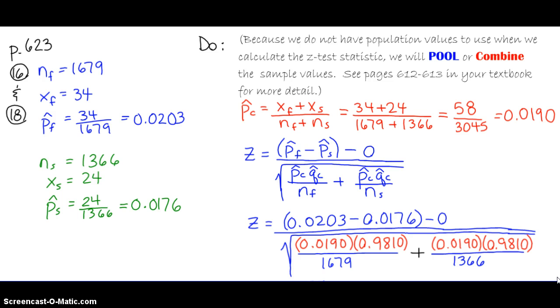And number 18, where we actually carry out the hypothesis test. I've rewritten here in blue and green the information on the individual populations, the high school freshmen and the high school seniors, who we are going to conduct the hypothesis test about, testing whether or not there's a difference in the proportion who use anabolic steroids between the freshmen and the seniors.